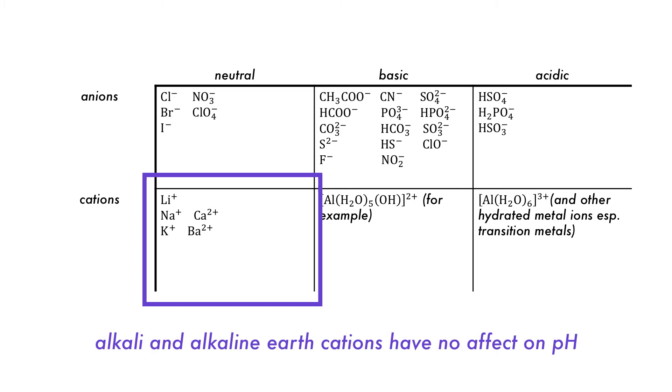Moving on to the cations. The metals of group 1 and 2, the alkali and alkaline earth metal cations, have no measurable effect on solution pH.